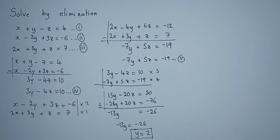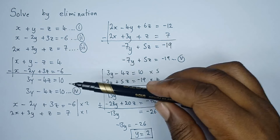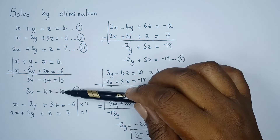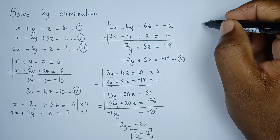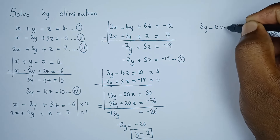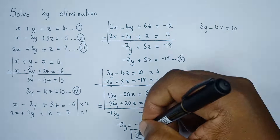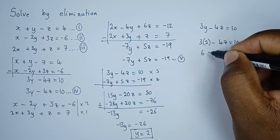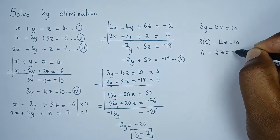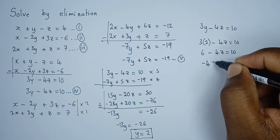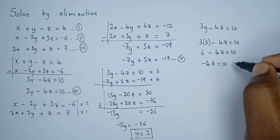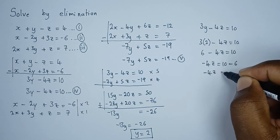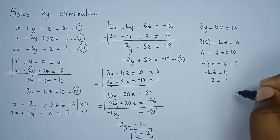Now that we have y, let's find z. We can use equation four: 3y minus 4z equals ten. Substituting y equals two: three times two minus four z equals ten, which gives six minus four z equals ten. Moving six to the other side: negative four z equals four, so z equals negative one.